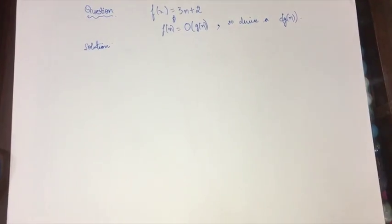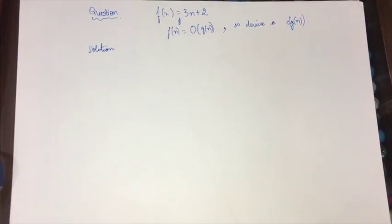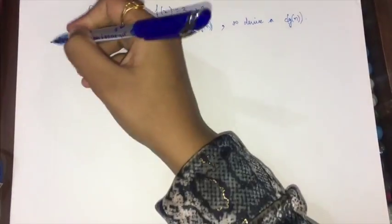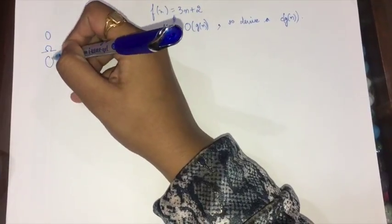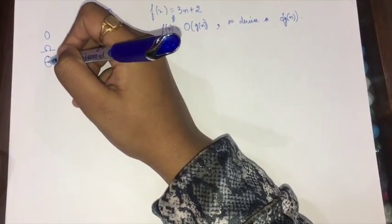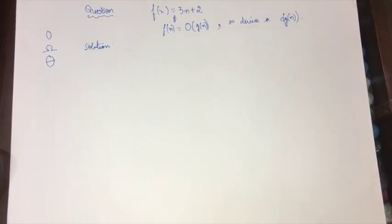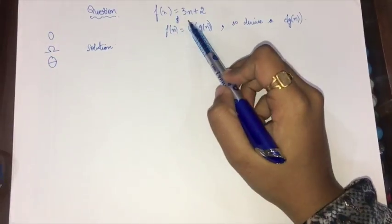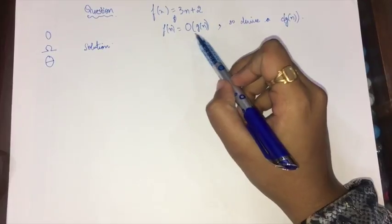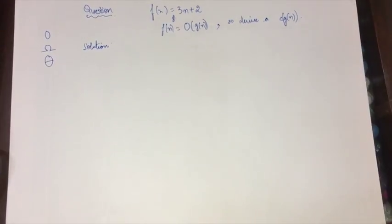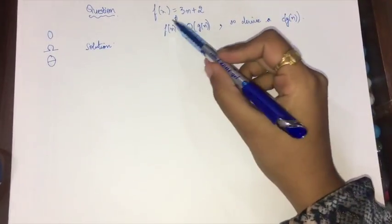Hello everyone. In the previous video we discussed asymptotic notations — the Big-O notation, the Omega notation, and the Theta notation — and we also discussed the graphs of the three notations. In this video, what we're going to discuss is: given a function f(n), we said that f(n) is Big-O of g(n). You can see the conditions for those in the previous video in the playlist.